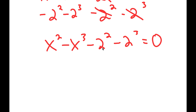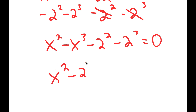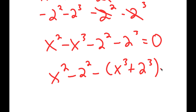Now I'm going to group all the powers of threes and powers of twos together, so I get x squared minus 2 squared minus x to the power of 3 plus 2 to the power of 3 is equal to zero.